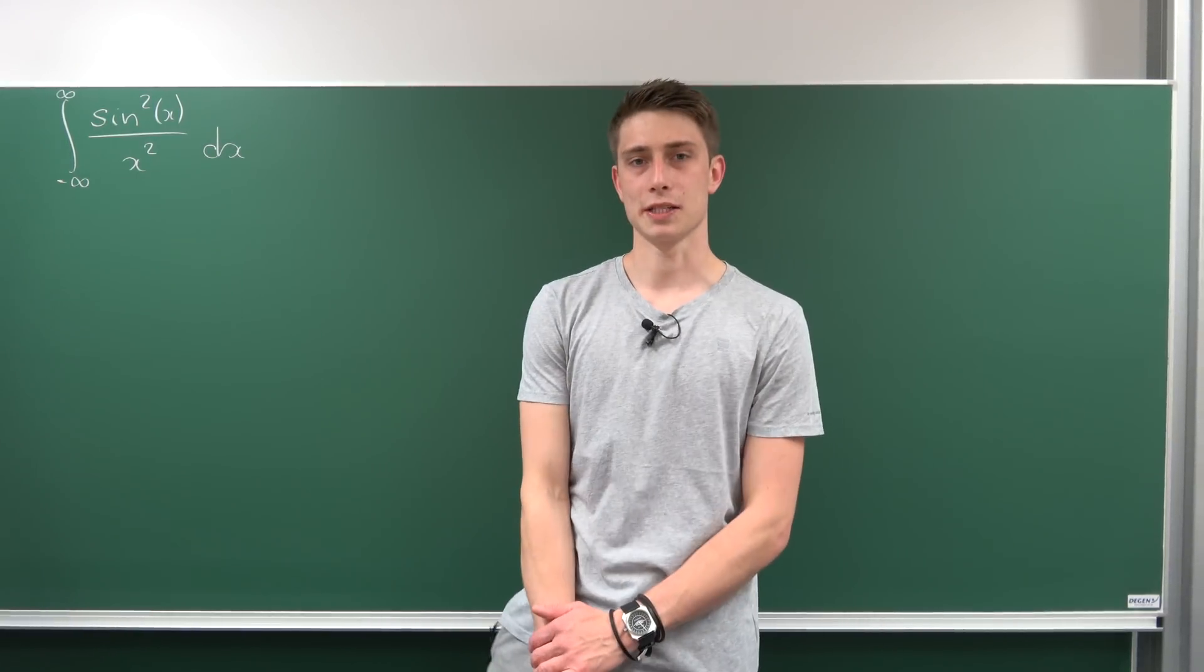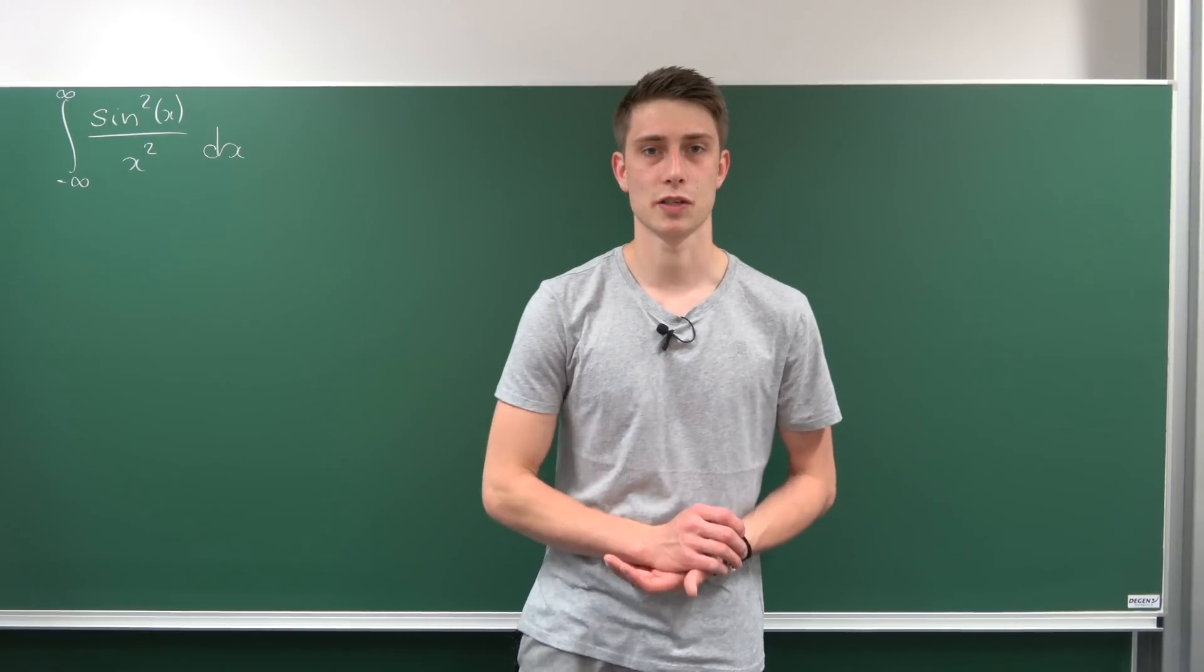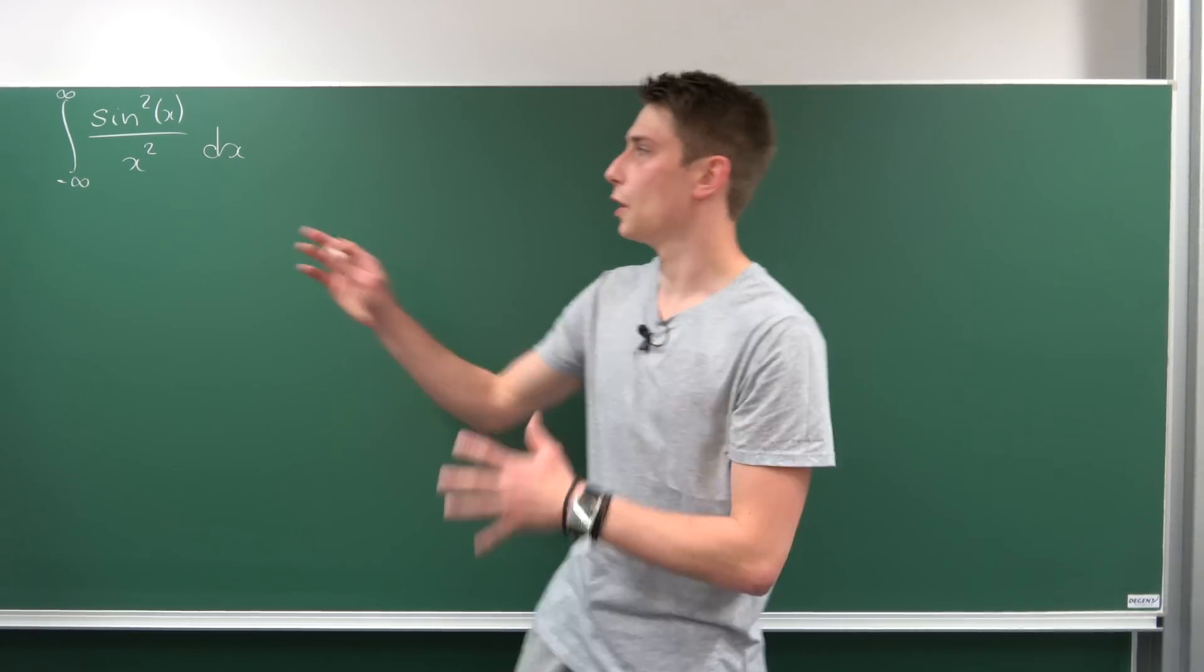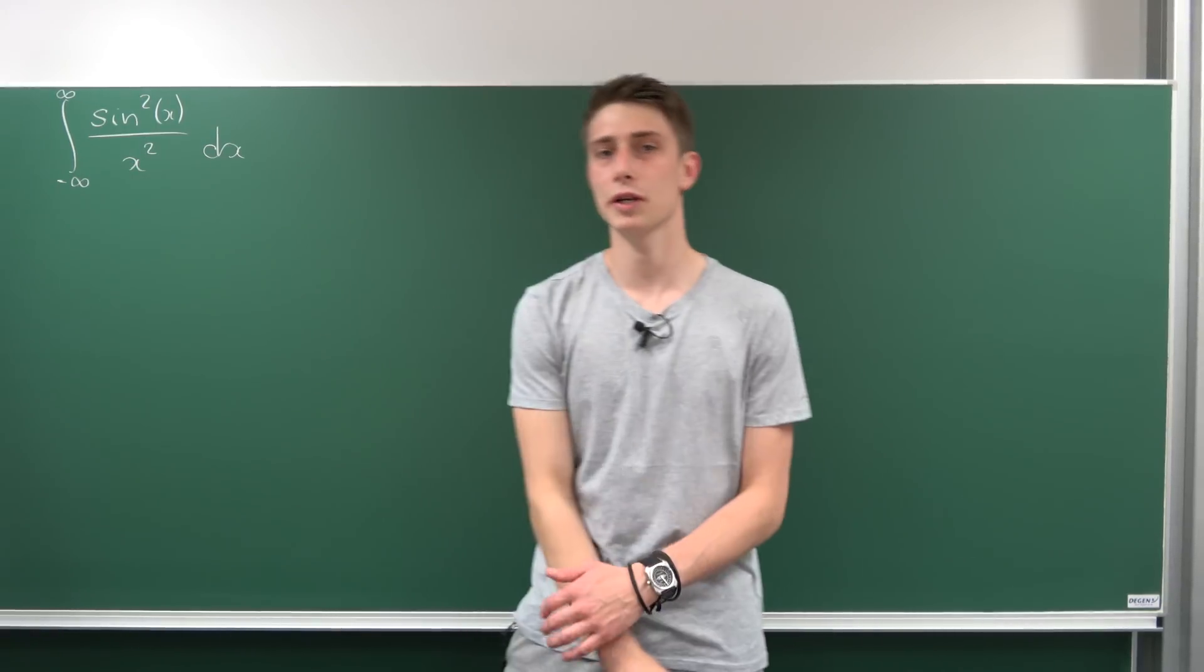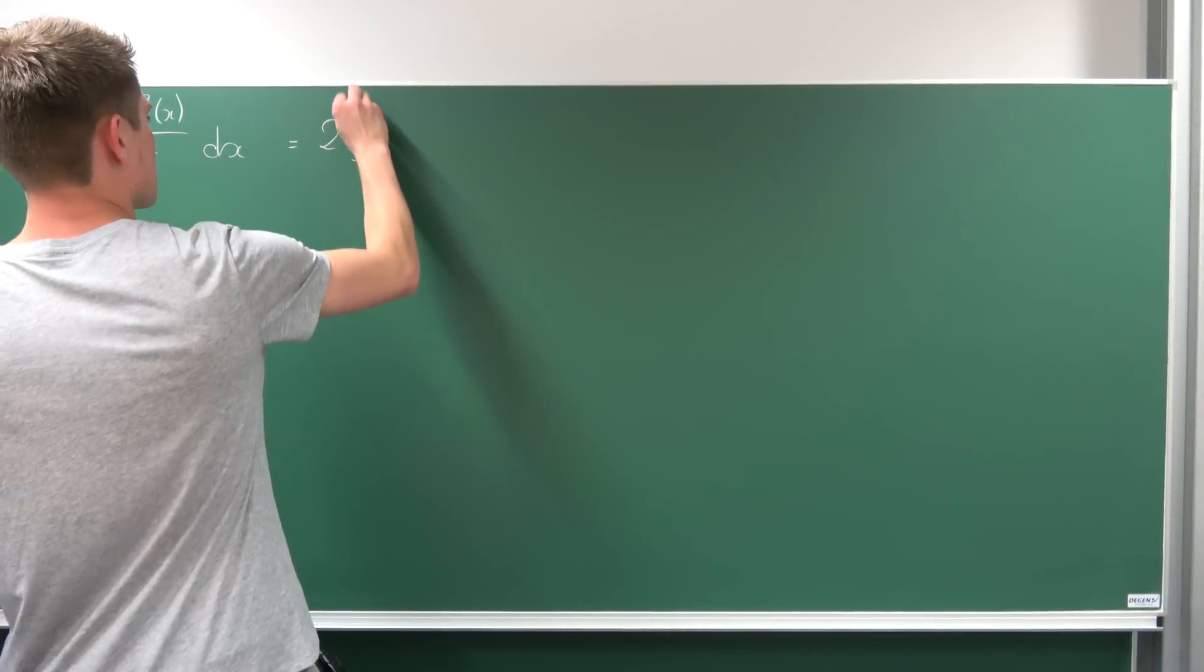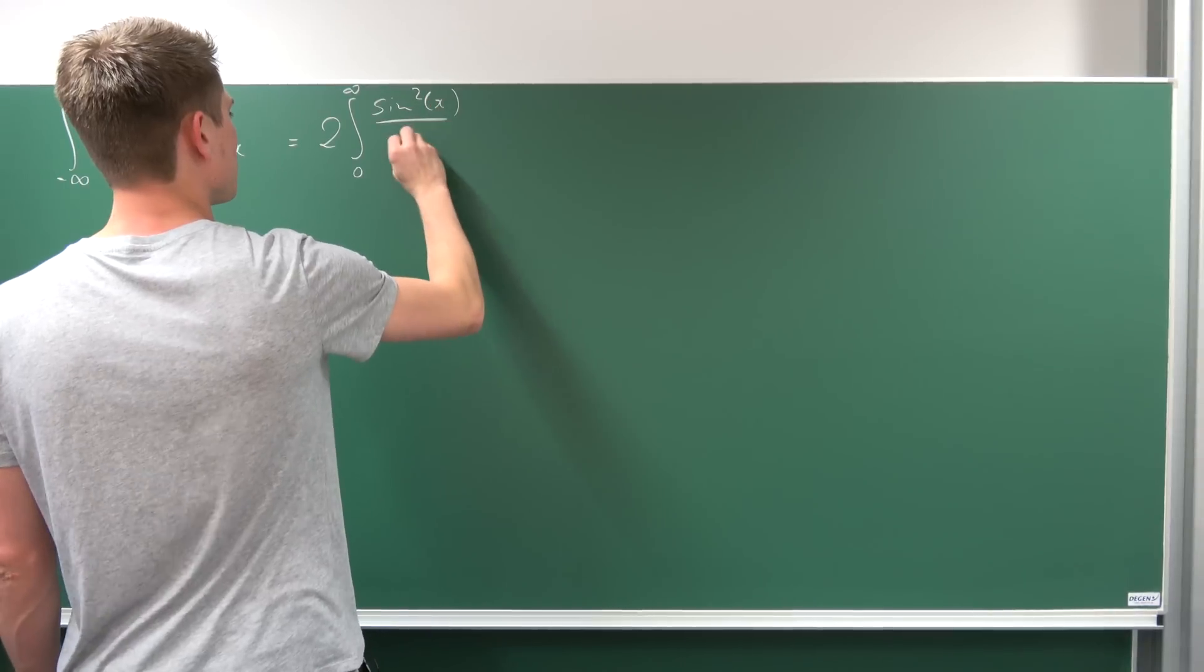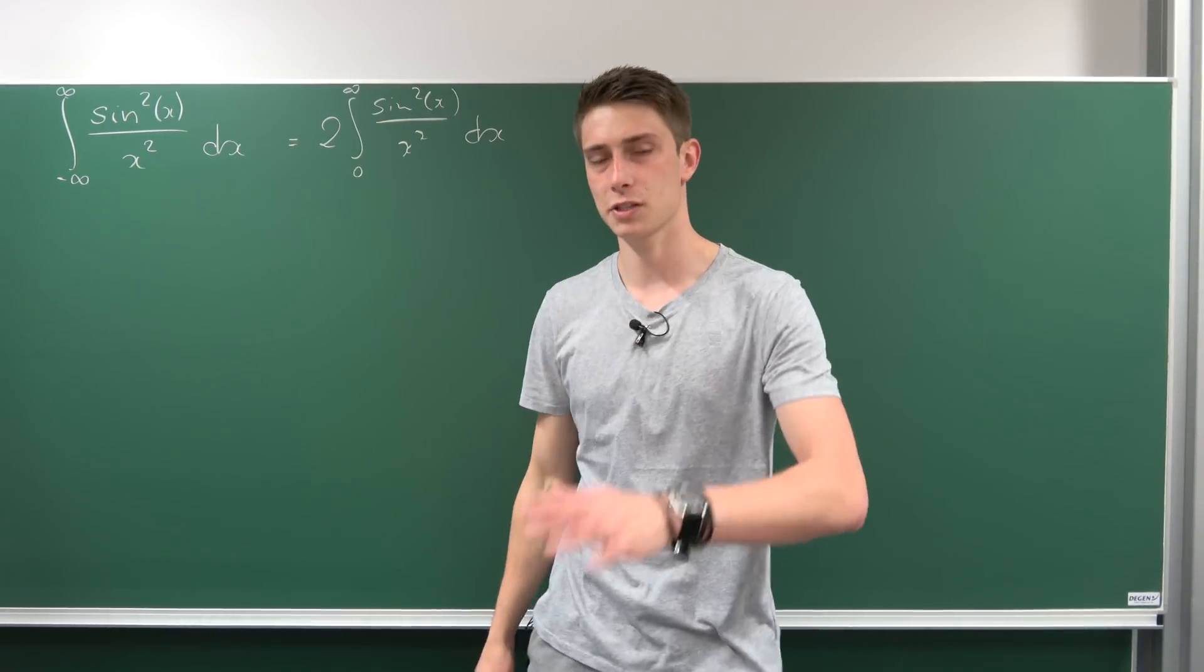We have an upper and lower bound from minus infinity to infinity and we're not dealing with bilateral Laplace transforms. What we want to do first is use the evenness of this function. We have an even integrand, so we can rewrite this integral as 2 times the integral from 0 to infinity of sin²(x) over x² dx. That looks nice.